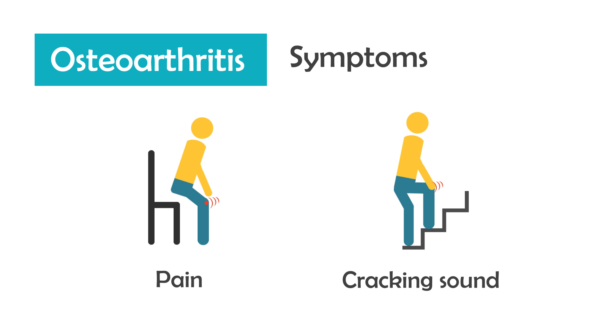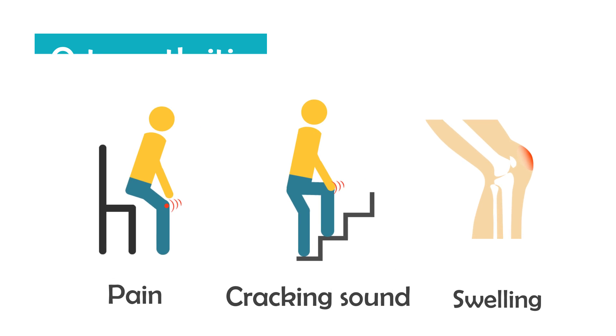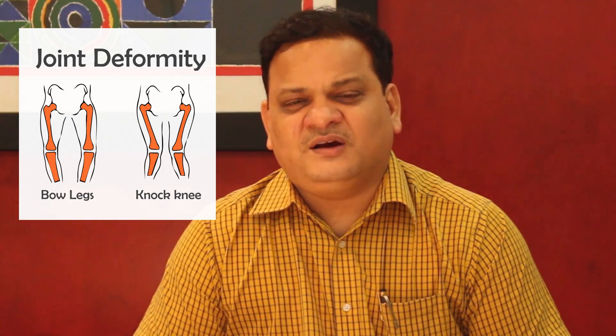That is the first symptom. Followed by that, they develop some swelling of the knee. Then when they walk for about 15 to 20 minutes, the knee joint pains and they have to stop. In very advanced disease, patients will have deformity of the joint. Especially in the Indian scenario, we see bow legs rather than knock knees, and the patients typically walk with a waddling gait.